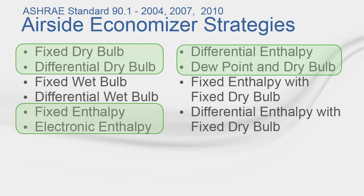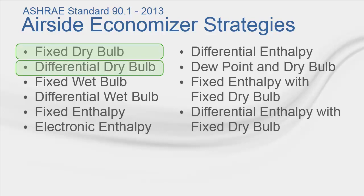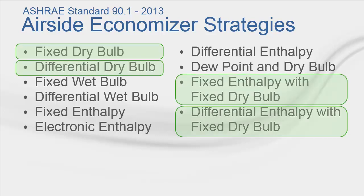The committee's explanation for this exclusion can be found in the forward to addendum DW of Standard 90.1-2010. The four types allowed by Standard 90.1-2013 are the fixed dry bulb, differential dry bulb, fixed enthalpy with fixed dry bulb, and differential enthalpy with fixed dry bulb methods.